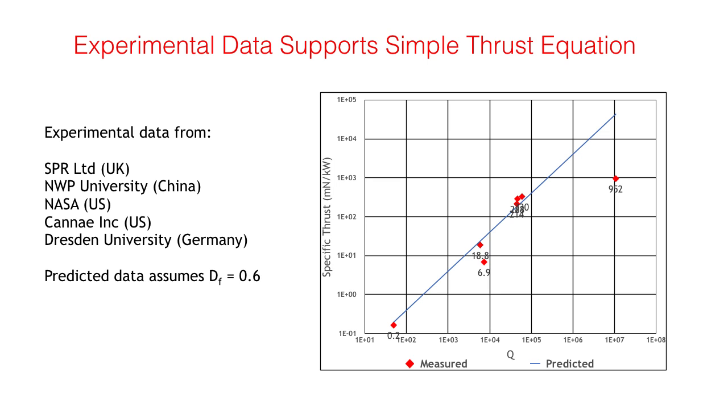The acid test for any scientific theory is does it make predictions which are demonstrated by experiment. Experimental data has been published for seven different M-drive thrusters from five organizations worldwide. The chart shows specific thrust, that is thrust in million newtons per kilowatt of input power, plotted against the measured Q of the cavity. The data points can be compared with a predicted specific thrust characteristic shown in blue, which is based on the simple static thrust equation we have derived and assumes a design factor of 0.6. As can be seen, five of the thrusters sit very closely on the predicted line, whereas the two outliers are thrusters that rely on a dielectric element inside the cavity.